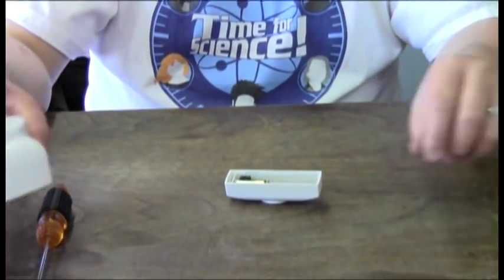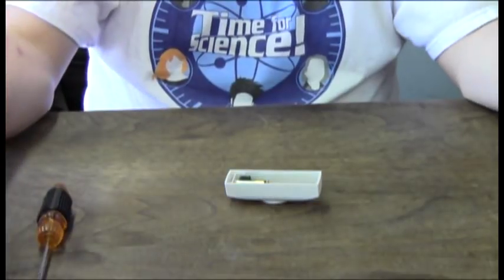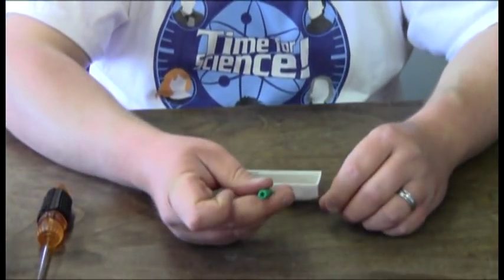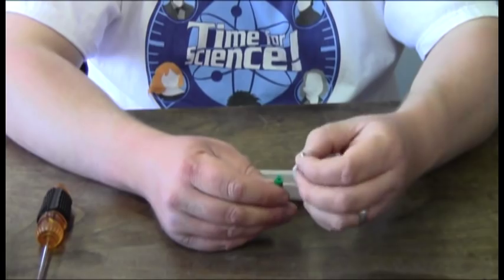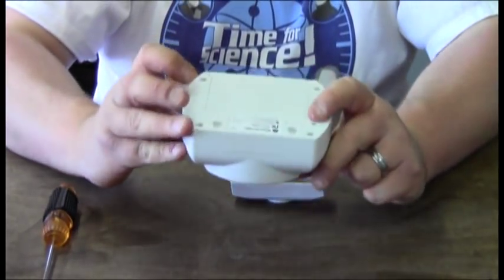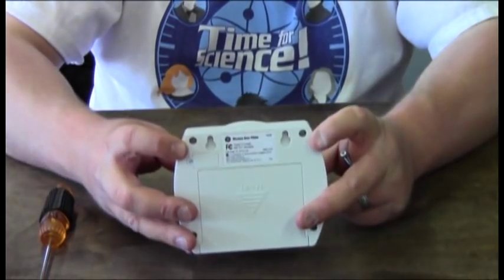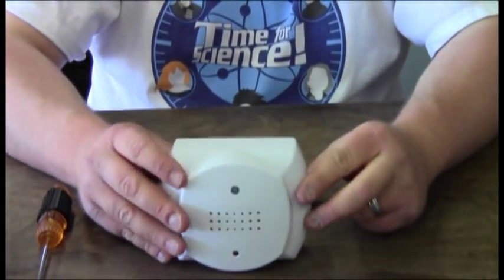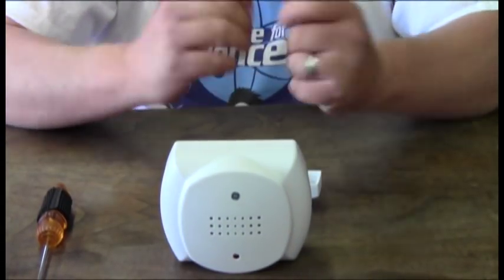Once you have that done you're going to mount the receiver and bell by putting in the wall anchors into your drywall and then screwing the screws into it, leaving them partially out so they will fit in the key switches on the back. For my purposes I'm just going to set this on a bookshelf so I won't need to mount it to the wall.